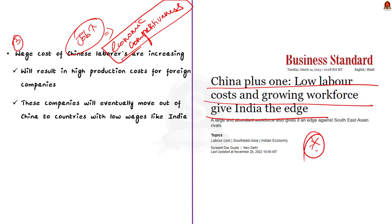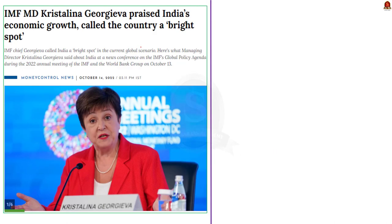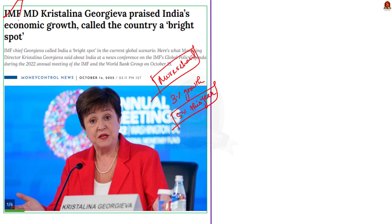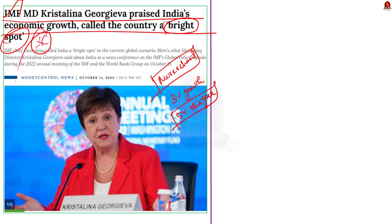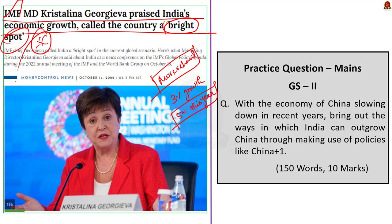China's growth rate is slowing rapidly — it recorded only 3% growth last year and is projected to grow only 5% this year. These structural problems are the reason for the slowdown. The author concludes that the Indian economy is more resilient than the Chinese economy, as India's growth projections are higher than China's for the current year. This is why even the IMF's managing director termed India as a bright spot in the global economy.